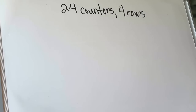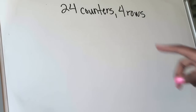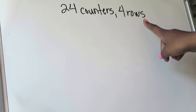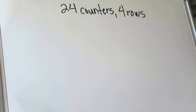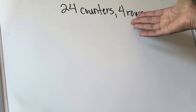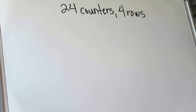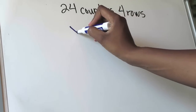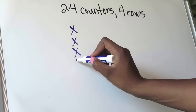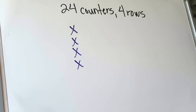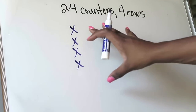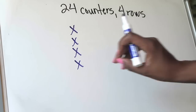All right, here we have our second example. In our second example, we are told that we need to take 24 counters and arrange them into four equal rows. Same idea — we know how many counters in total we have, we know how many equal groups we need to create, which is four because we're putting them in four rows. But we just don't know how many is going to be in each row. So we're going to start again by establishing our four rows: row one, row two, row three, and row four.